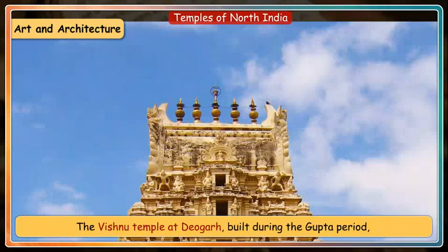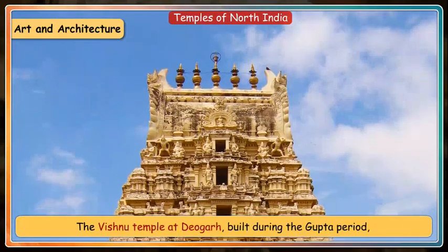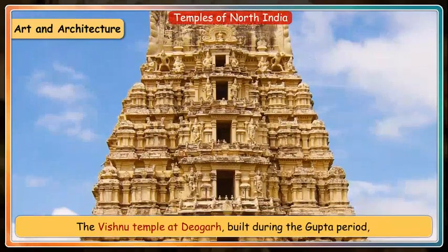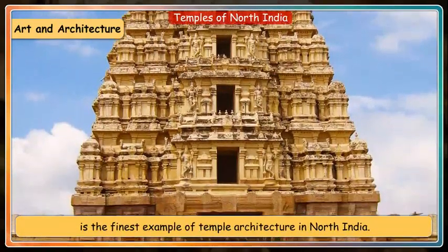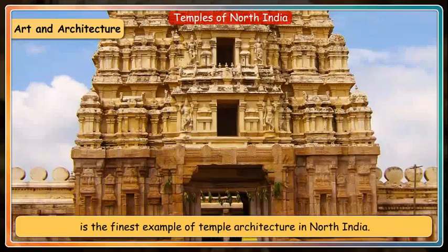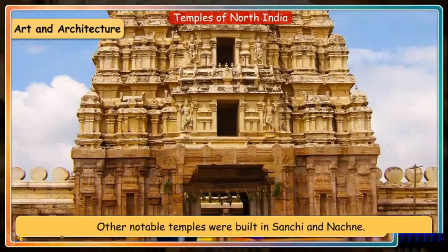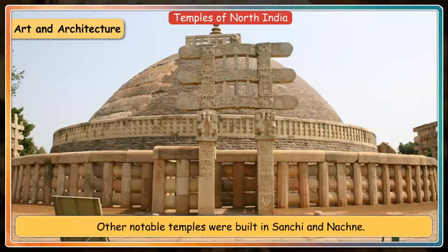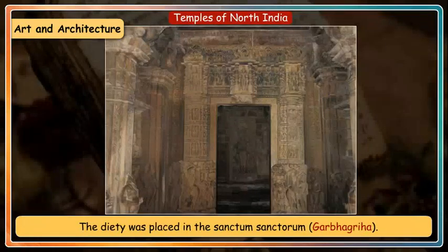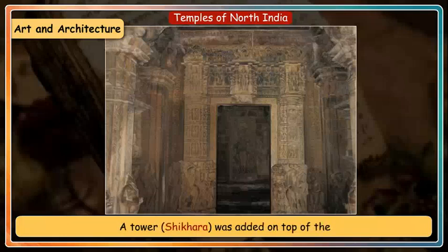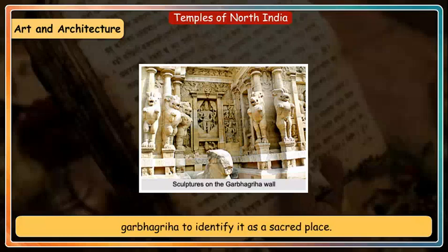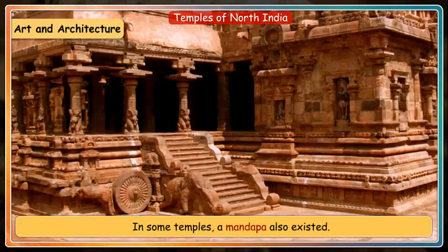The Vishnu temple at Devgarh, built during the Gupta period, is the finest example of temple architecture in North India. Other notable temples were built at Sanchi and Nachna, dedicated to Vishnu, Shiva and Durga. The deity was placed in the Sanctum Sanctorum, i.e. Garbhagriha. A tower called the Shikhara was added on top of the Garbhagriha to identify it as a sacred place. In some temples, a mandapa also existed.